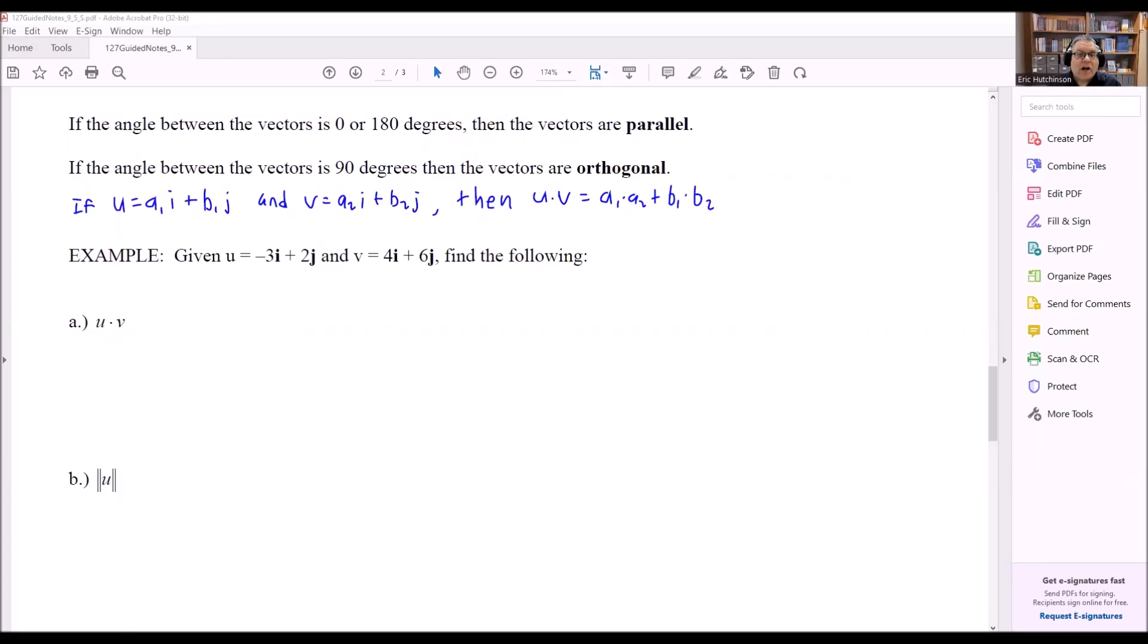We're going to talk about how we can classify angles between vectors as either parallel or orthogonal. If the angle between the vectors is either 0 or 180 degrees, we say that the vectors are considered to be parallel.